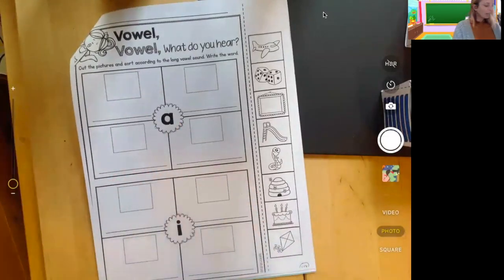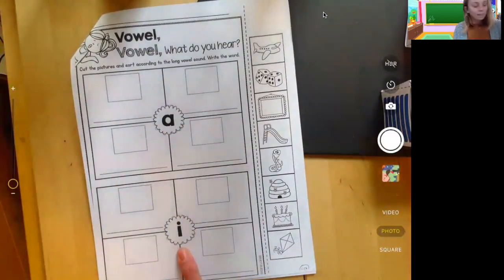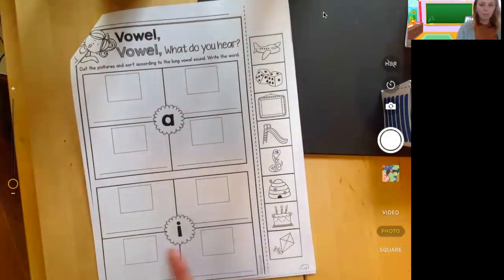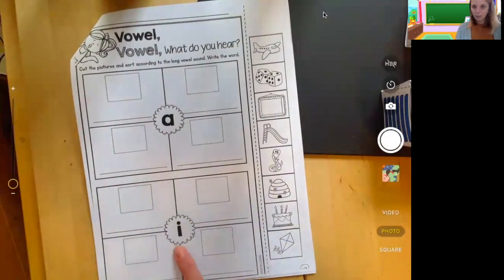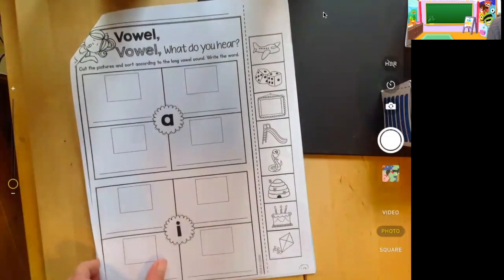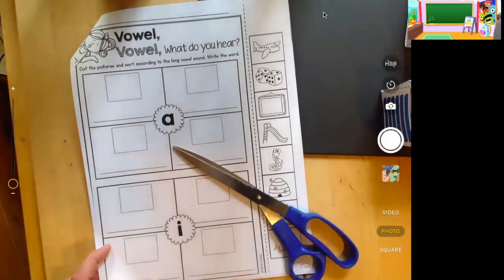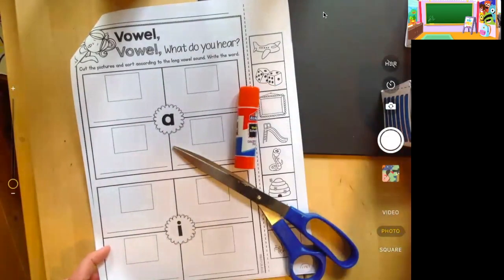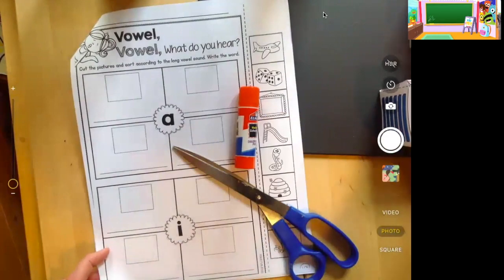And if you hear the long I, then you're going to cut the picture and put it here, and then try your best to write the word, since this week we're working on long I magic E. So you'll need some scissors, a glue stick, and some crayons if you want to color it in.